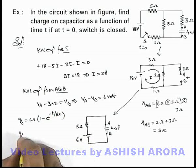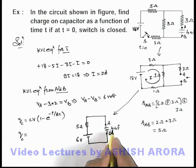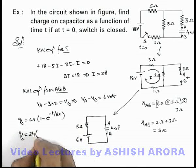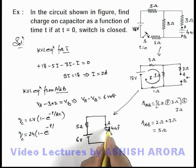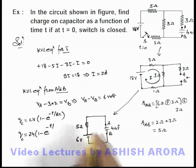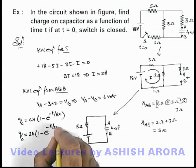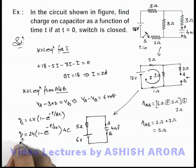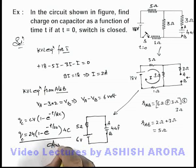If we substitute the values for the charge, capacitance is 4 microfarad, V is 6 volt so this can be written as 24(1 minus e to power minus t by 20), where the product of R and C is 20 microseconds, and this will be the result in microcoulomb. This is the charge on capacitor as a function of time and this is the answer to this problem.